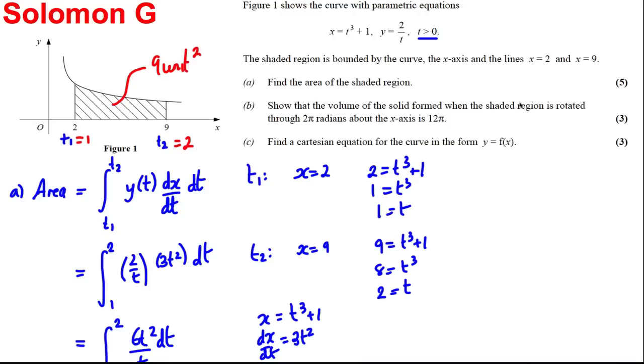And we've also found dx by dt, which we might need later, is actually 3t squared. Okay, and that's the area for the 5 marks at the start. So I'm going to rub this out and move on to the next part.